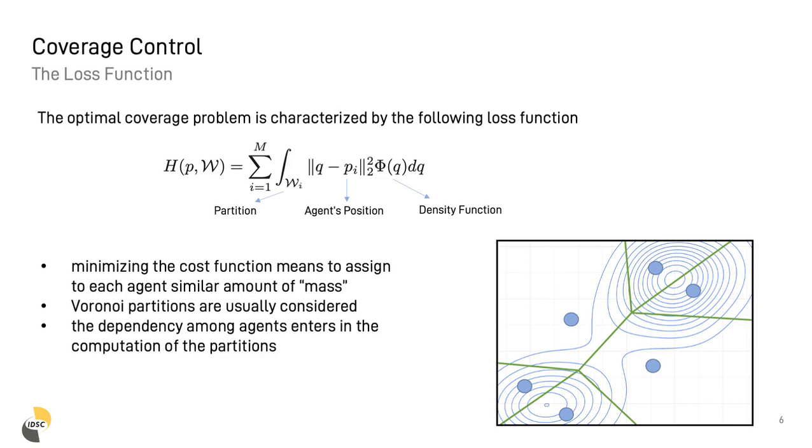The coverage objective is then characterized by the following cost function, where for each agent it is penalized the integral of the product of the distance between the agent position and all the points in its partition and the density function evaluated in those points. Intuitively, minimizing the cost function means to assign to each agent similar amount of mass. While the optimization problem can be quite complex to solve for generic partitions, it becomes tractable when the partitions W are chosen to be Voronoi.